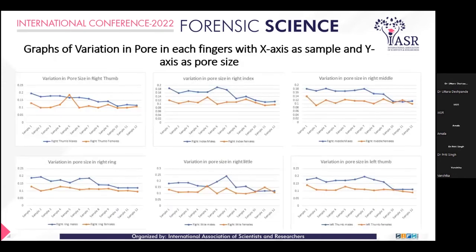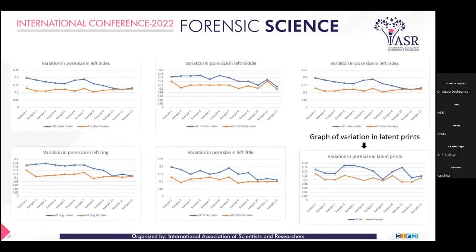These are the graphs — in these graphs, the blue line indicates male fingerprints and the orange line indicates female fingerprints. A slight difference between male and female can be seen. This shows the graph for each individual finger, including left index, left hand, and right hand fingerprints. The last graph shows variation in latent prints, where again the blue line indicates male and the orange line indicates female fingerprints — these are the developed latent prints that were then analyzed.